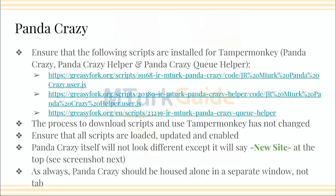If you want to use PandaCrazy, you need three scripts loaded, enabled, and running: PandaCrazy, PandaCrazy Helper, and PandaCrazy Q Helper. The last one — Q Helper — I honestly think you don't absolutely need it, but I would recommend it given where we are right now with the changes going on. The process to download the scripts and use TamperMonkey is the same. Nothing's changed there. You want to make sure your scripts are loaded, updated, and enabled in order to use them.